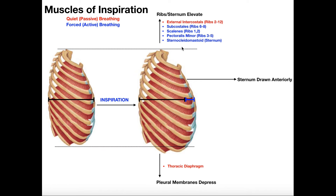Depending on your class, you may only see a few of these, but there are actually a lot more and some play bigger roles than others. There are a few muscles that are going to elevate the ribs and the sternum — pulling the ribs upward just like the external intercostals do, and also pulling the sternum upwards. What that does is it actually draws the sternum a little bit anteriorly. So not only are we going to be depressing the pleural membranes down, we're going to be lifting the ribs and sternum up and also drawing the sternum anteriorly.